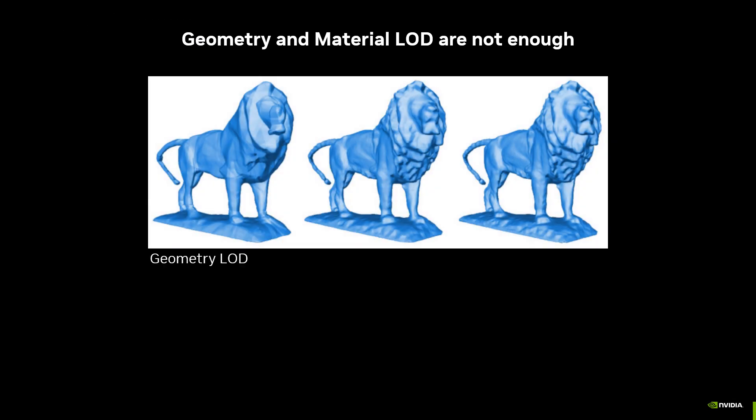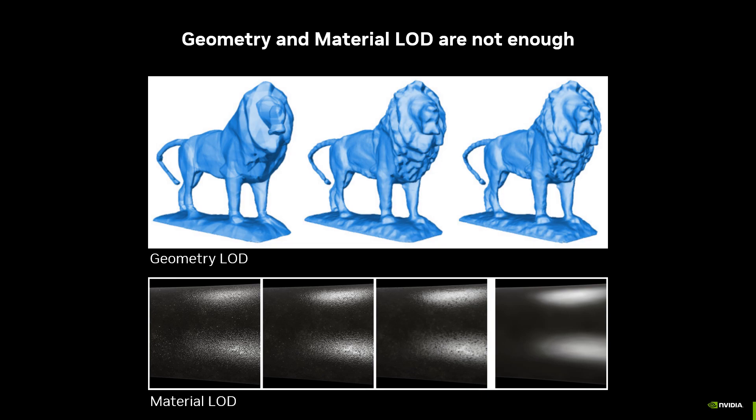We can try to fix this by doing LOD on the geometry or the materials in the scene. The problem is that this will change the rendering, sometimes dramatically. This is because geometry and materials fuse together under minification and can't be considered separately.